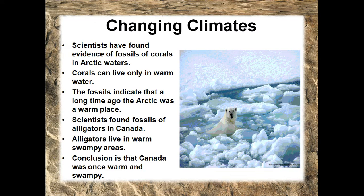Fossils also indicate changes in climate. Scientists have found fossils of corals in Arctic waters. Corals can live only in warm water, so the fossils indicate that a long time ago the Arctic was a warm place. Scientists also found fossils of alligators in Canada. Alligators live in warm, swampy areas — the conclusion, therefore, is that Canada was once warm and swampy.